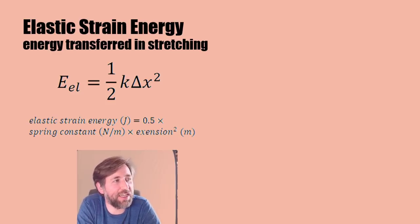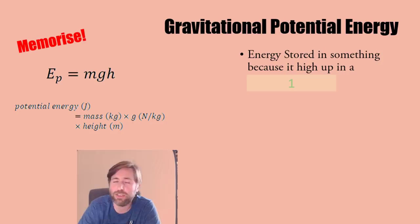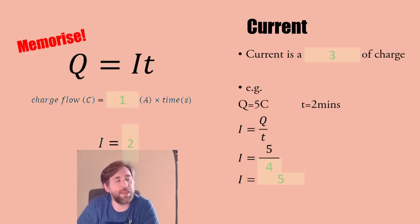Elastic strain energy is the energy transferred in stretching. Half times the spring constant times the extension squared. Don't forget your squared and don't forget to use SI units - extension in meters if you want energy in joules. Gravitational potential energy is energy stored in something because it's high up in a gravitational field.